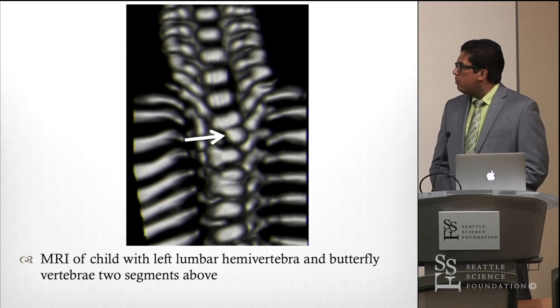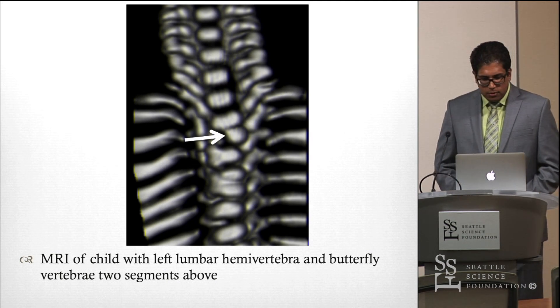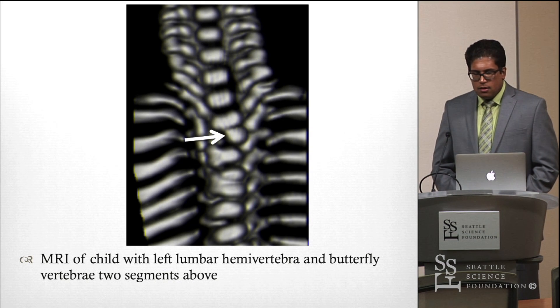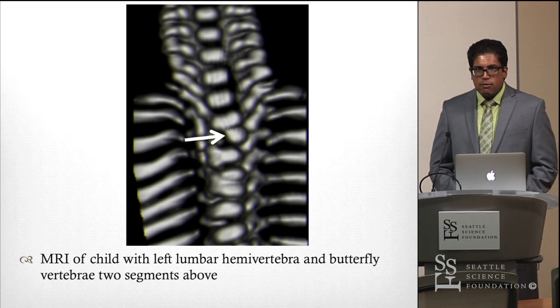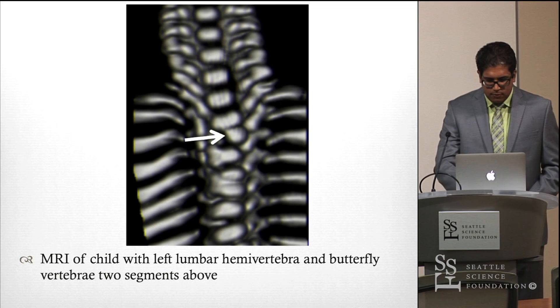This is another image showing an MRI of a child with a left lumbar hemivertebra. The location of hemivertebra can vary — you can have thoracic ones, cervical ones, or lumbar hemivertebrae.